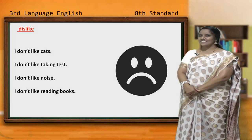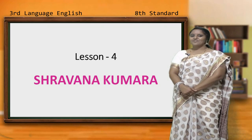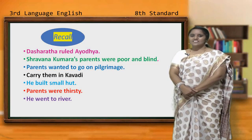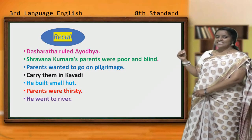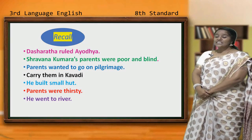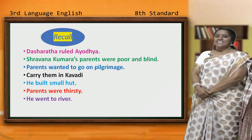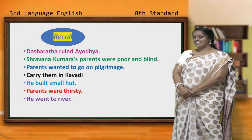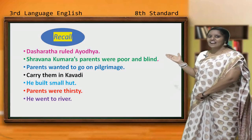Let us move to the lesson — that is Shravana Kumara. Before going to today's text, let us recall the points from the earlier session. Dasaratha ruled Ayodhya. During the time of Shravana Kumara, who was the king of Ayodhya? Dasaratha. Shravana Kumara's parents were poor and blind.